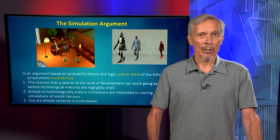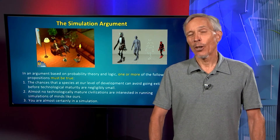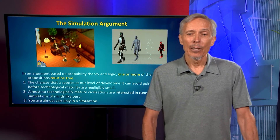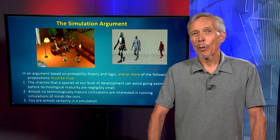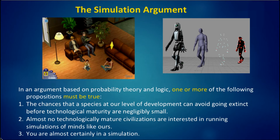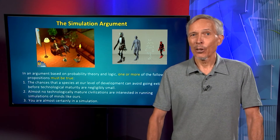The end point of these arguments is a provocative argument put out by philosophers a decade or so ago, called the simulation argument. Based entirely on probability theory and logic, and not really referring to physics or biology at all, one or more of the following propositions must be true. In the simulation argument, technological maturity is defined as a state of a civilization where they can reproduce entities like themselves purely digitally, computationally — artificial life, essentially. We might argue that we're within sight of that, with our computers and brains replicated with computer technology and artificial intelligence.